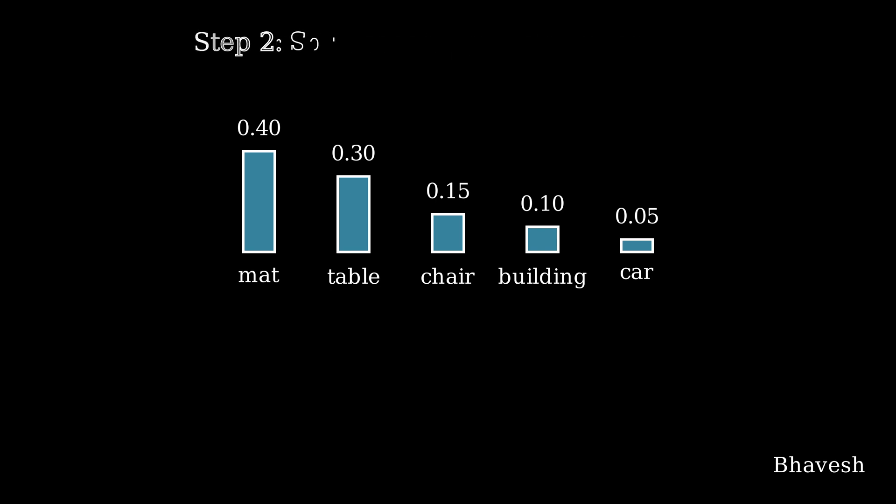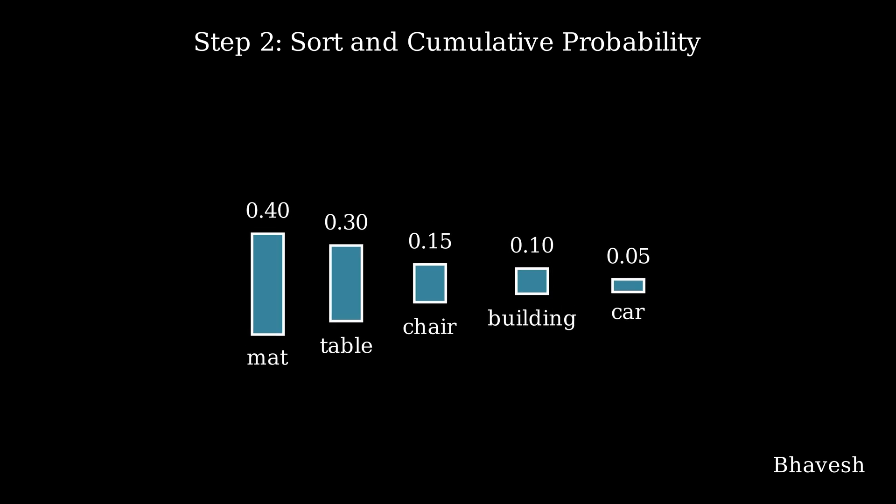The next step is to sort and calculate the cumulative probability. The distribution is already sorted in descending order. The cumulative probabilities are: 0.4, 0.7, 0.85, 0.95, and 1. For example, the cumulative probability up to 'table' is 0.7. I add the probability of 'chair', which is 0.15, and the overall cumulative probability up to 'chair' becomes 0.85.